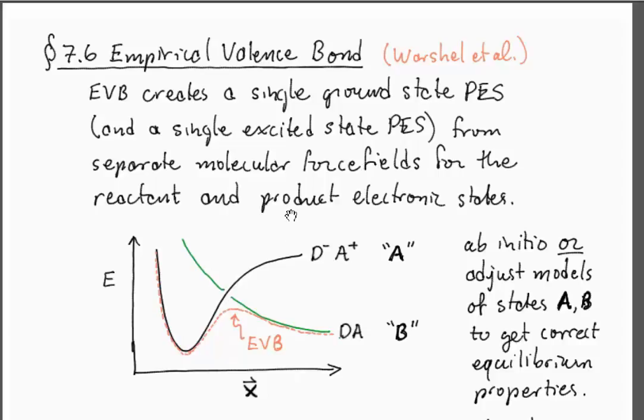As a very simple example, if you have a donor and an acceptor and you have a reactant state before the electron has been transferred and the product state after the electron has been transferred, these two things will have different potential energy landscapes even at the same configuration.